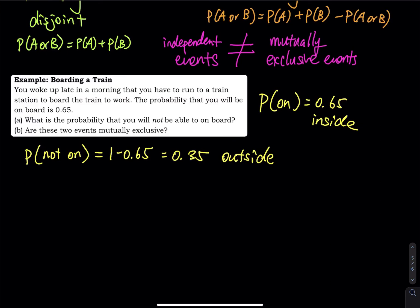Are these two events mutually exclusive? The answer is yes, because you cannot be on board and not on board at the same time. So you cannot be inside and outside at the same time. So the probability of on and not on is equal to zero. So these two events are mutually exclusive. I use the word ME. M stands for mutually. E stands for exclusive.